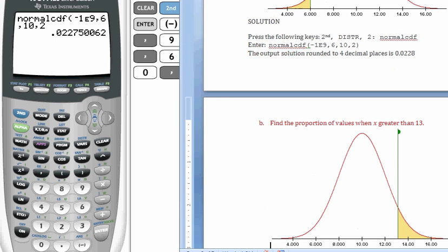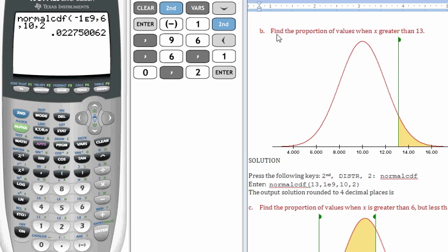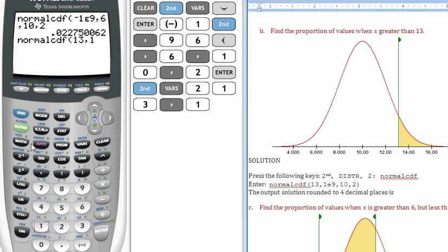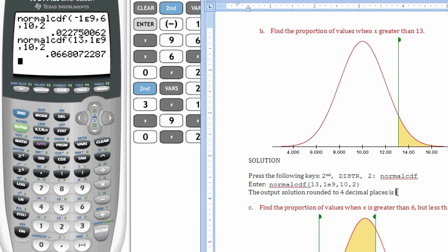Going on to the next one. Here with problem B, we're looking at the proportion of values when x is greater than 13, so we're going from 13 up to positive infinity. Do the same keystroke, second, distribution. It's a normal CDF, number 2. I'm going from 13 to positive infinity, 1, e, 9, with a mean of 10 and a standard deviation of 2. Hit enter, and I get the solution of 0.0668. So just about 7%.